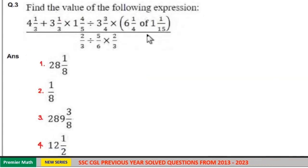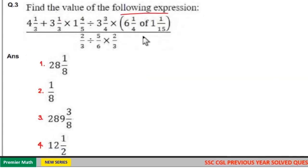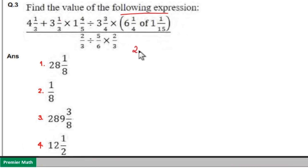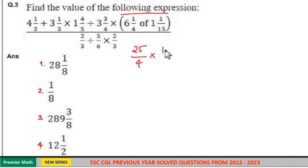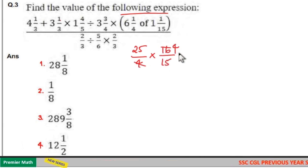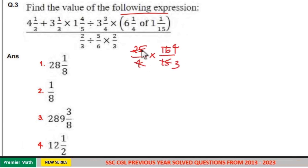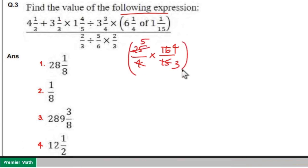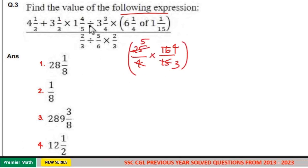Find the value of the following expression. As per BODMAS rule, solve the bracket first. That is 6 into 4 plus 1 is 25 by 4, and 15 plus 1 is 16 by 15. Then 4 goes 4 times in 16, 5 goes 3 times in 15, 5 goes 5 times in 25. So this term becomes 20 by 3.